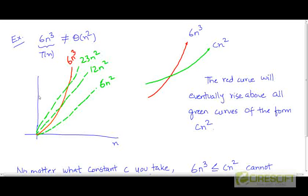And the reason for that is, if we plot T as a function of n, we are going to get this red curve which grows very rapidly as a function of n.